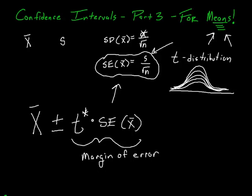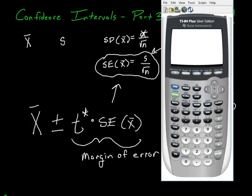Now remember, to find T star, you have to know your level of confidence and your degrees of freedom. Degrees of freedom is just how we've defined the different T distributions based on sample size, and it's simply your sample size minus one. So if you have a TI-84 calculator, you have the luxury of saying, I want to do an invert T instead of an invert norm to find a T star score.